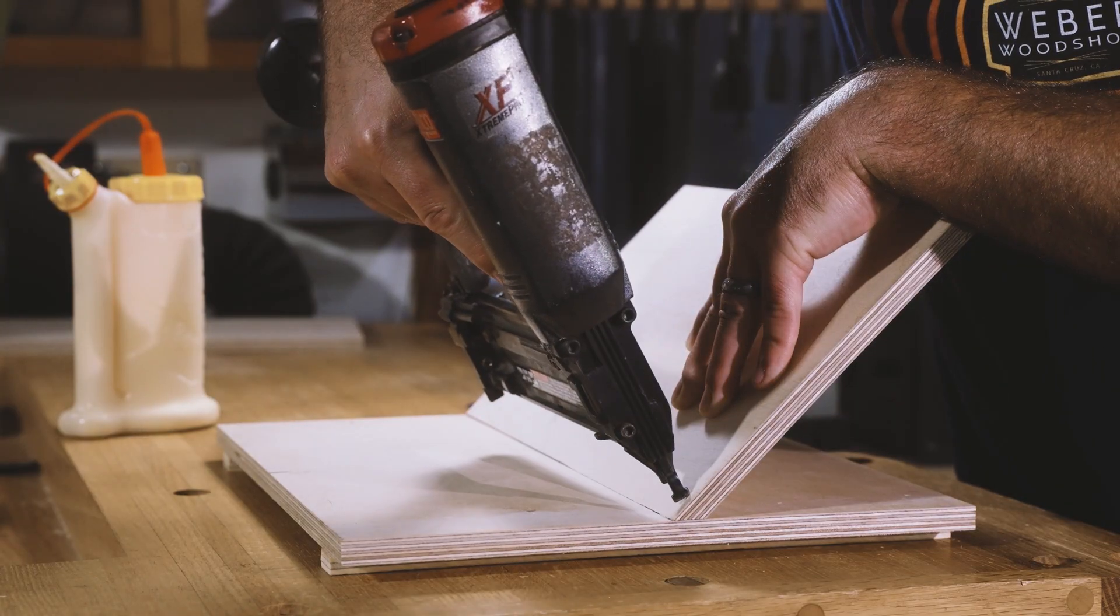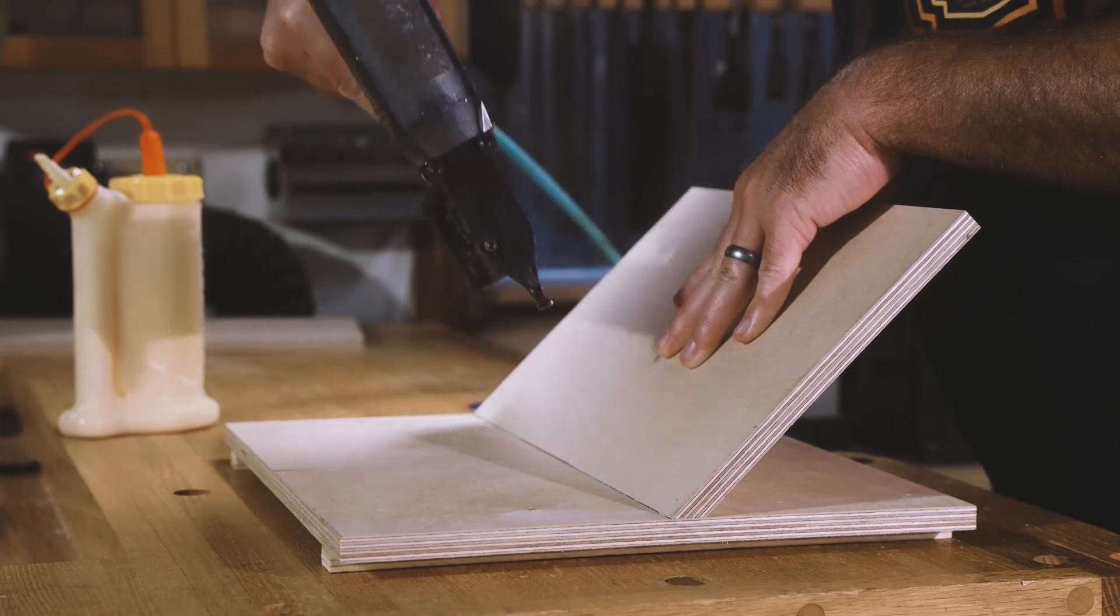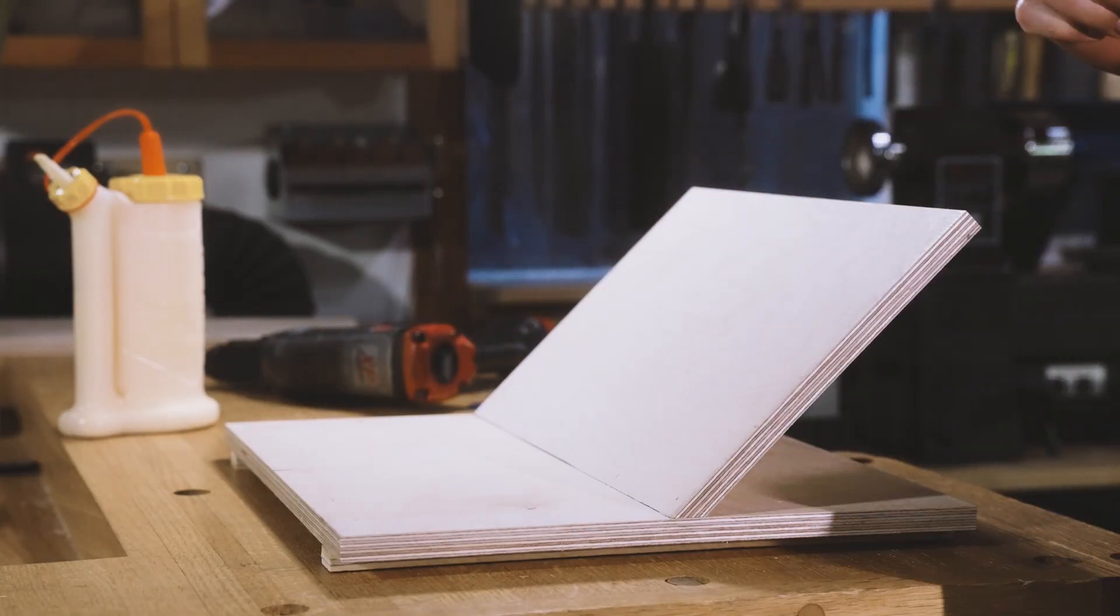Then add a few brad nails to hold it down, but don't put any nails near the center of the jig where the table saw will cut through later.